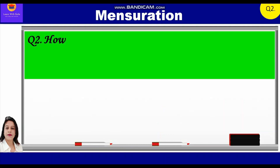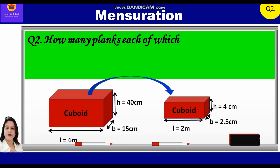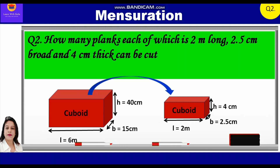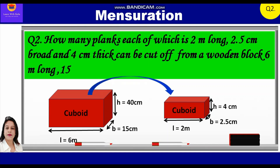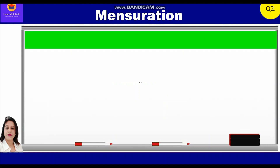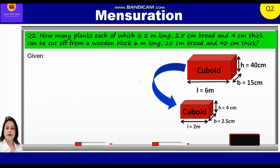Now let's take up the second question. How many planks, each of which is 2 meter long, 2.5 centimeter broad, and 4 centimeter thick, can be cut off from a wooden block 6 meters long, 15 centimeters broad, and 40 centimeters thick? Given: dimensions of each plank — length is equal to 2 meters, which is equal to 200 centimeter.